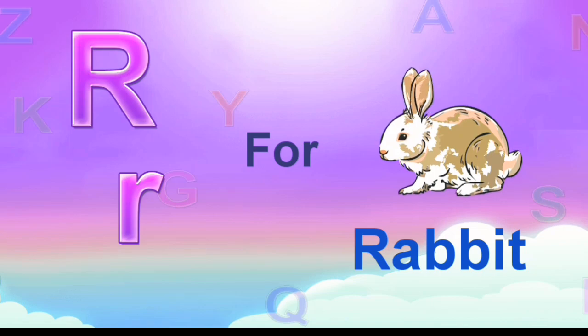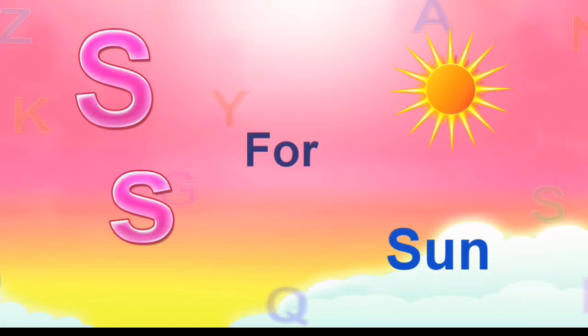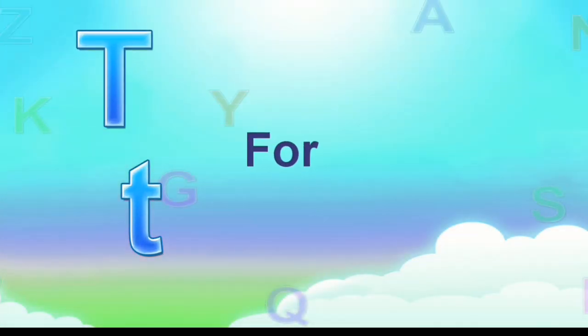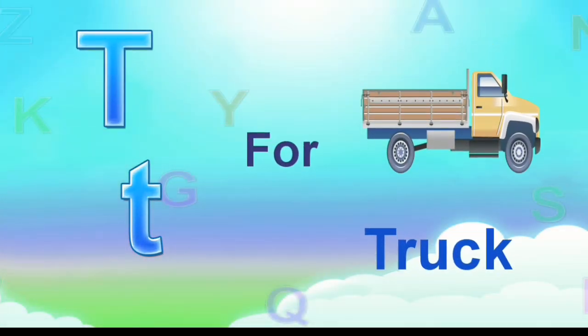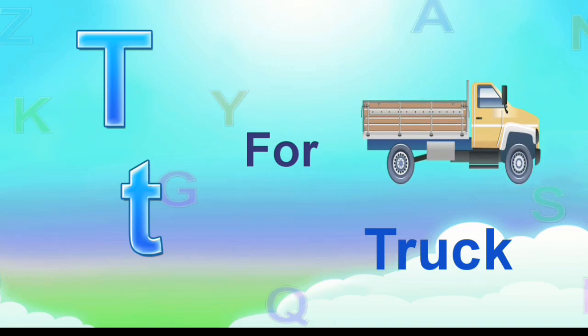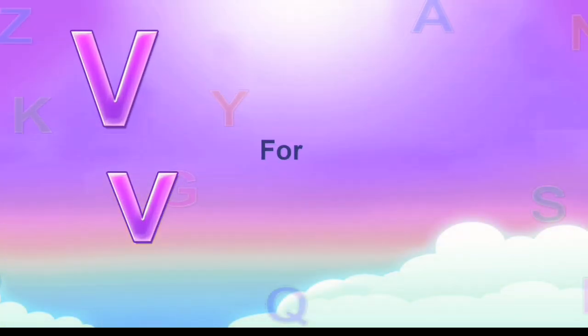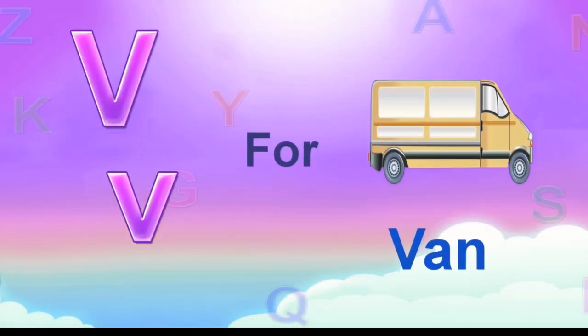R for rabbit. S for sun. T for truck. U for umbrella. V for van.